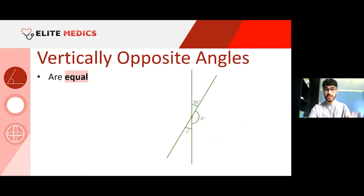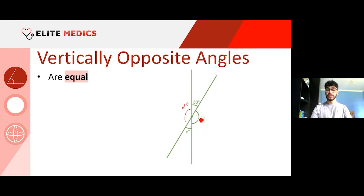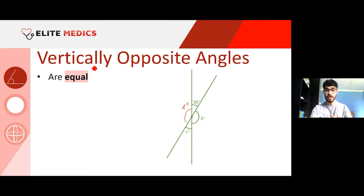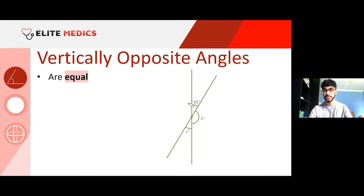Vertically opposite angles are equal — that's essentially what I've just shown you. C and 30 are equal, and B and D are equal. Don't be too confused by the word 'vertically' — I've always just considered it the name for it, and looked at opposite angles relative to a straight line. I wouldn't get too hung up on the word 'vertically.'